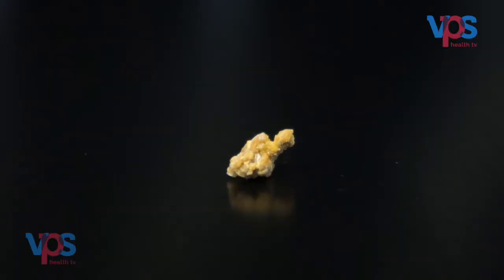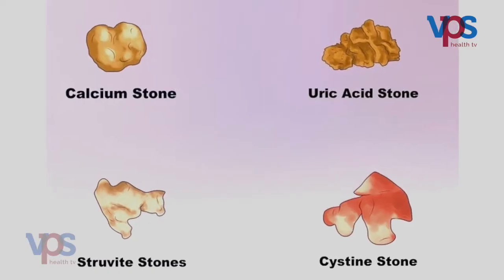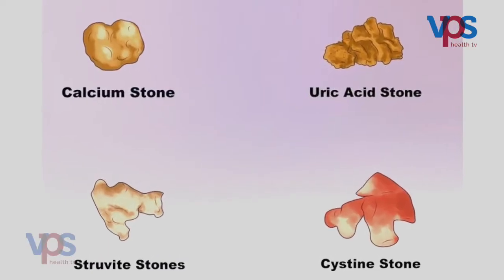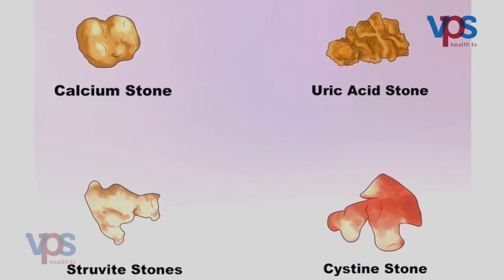Stones can be of different types like calcium oxalate, calcium phosphate, xanthine, struvite or infection stones, and uric acid stones. There are many types. These are some of the common stones which have been there.